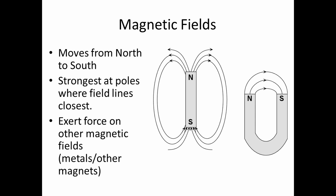First, magnetic fields move from north to south. So here you can see on a bar magnet, you see the magnetic field coming out of the north and going into the south. It's strongest at the poles, where those field lines are really close together, weakest in the center.